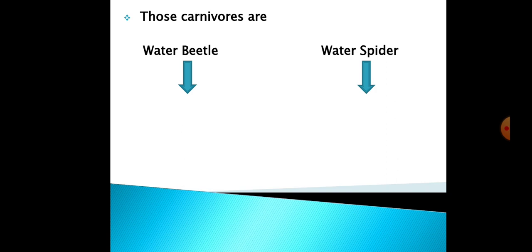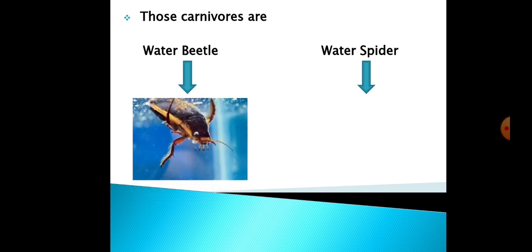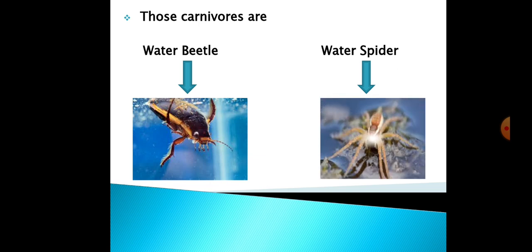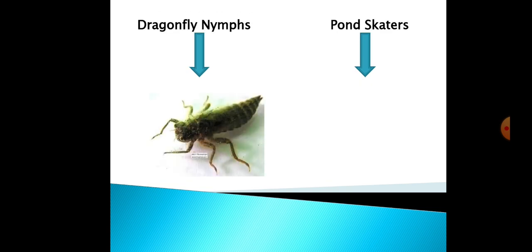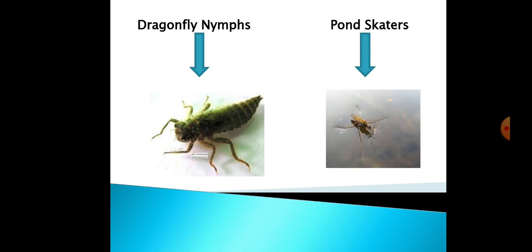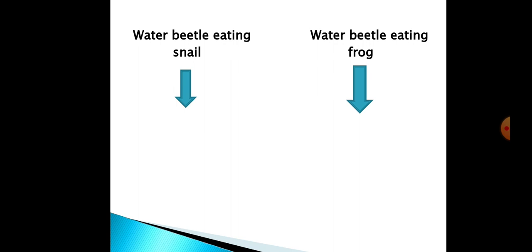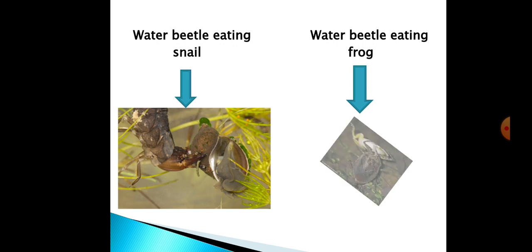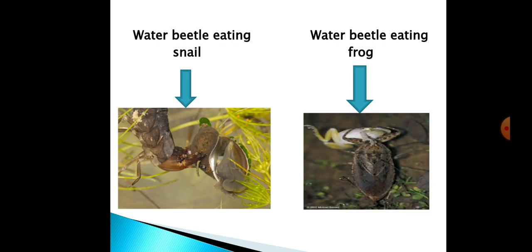The carnivores in the pond water include the water beetle, water spider, dragonfly nymphs, and pond skaters. These carnivores feed on the herbivores. For example, the water beetle eats the snail and also eats the frog, making it a carnivore.